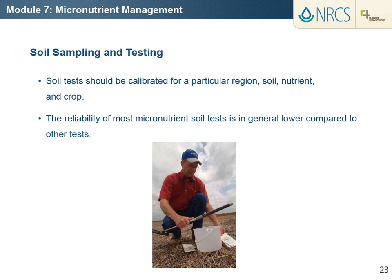Soil tests aid in determining whether a particular nutrient is responsible for poor crop production and provide the basis for deciding the type and amount of fertilizer needed to correct a nutrient deficiency. Soil samples collected for laboratory analysis must consist of a number of cores and a number of samples from the field. Care is needed to avoid contamination from sampling tools, sample containers, and other micronutrient sources. Various soil extractants are calibrated for use in different geographic areas and can extract widely different amounts of micronutrients. Therefore, for proper interpretation of test results, one must use the test calibrated for a particular region, soil, nutrient, and crop.